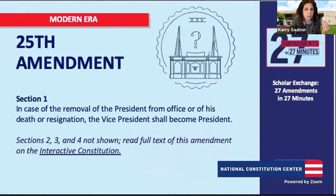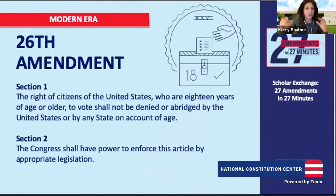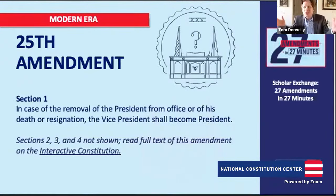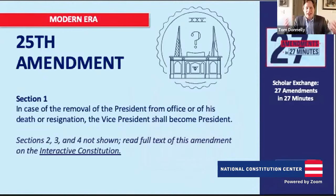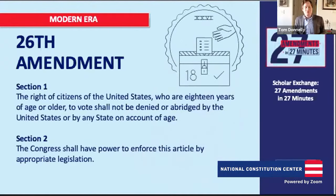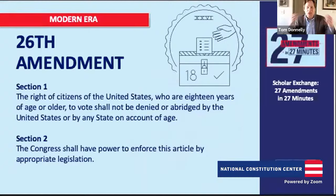The 25th Amendment, ratified in 1967, addresses three things: what happens when a president dies, when a president needs to replace a vice president, and what happens when a president is incapacitated. Each section lays out the process for those scenarios — in part a response to the assassination of JFK. The 26th Amendment is the fastest ratified — completed in just four months in 1971. It protects the right to vote for those 18 and older, responding to the Vietnam War, where people were drafted and dying but couldn't vote because they were under 21.